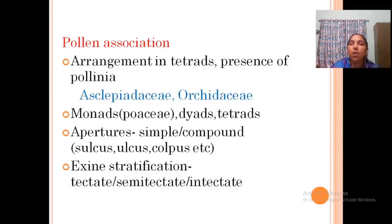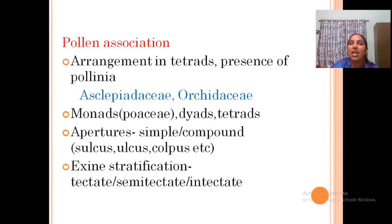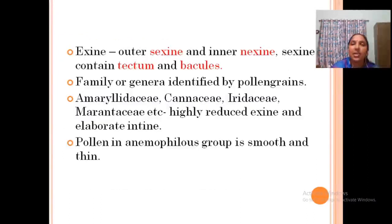Monads are characteristic of Poaceae; then there are dyads and tetrads. Apertures may be simple or compound — types include sulcus, colpus, etc. — giving monocolpate, tricolpate, and so on. Excine stratification or ornamentation is also very important: tectate, semitectate, intectate, etc.